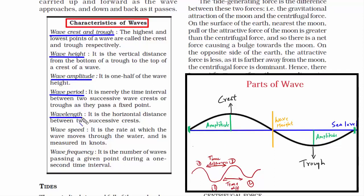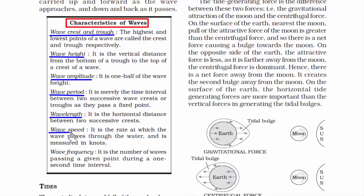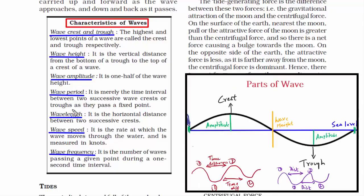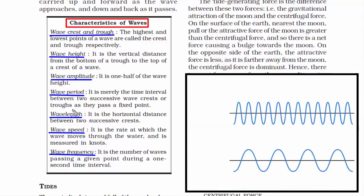The fifth characteristic is wave length — don't confuse this with wave period. Wave period is the time difference, but wavelength is the horizontal distance between crest to crest, as well as between trough to trough. The sixth is wave speed — the rate at which the wave moves through the water, measured in knots. The last is wave frequency — the number of waves passing a given point during a one-second interval. More cycles per second means higher frequency; fewer cycles means lower frequency. Wave frequency totally depends on the wave period.